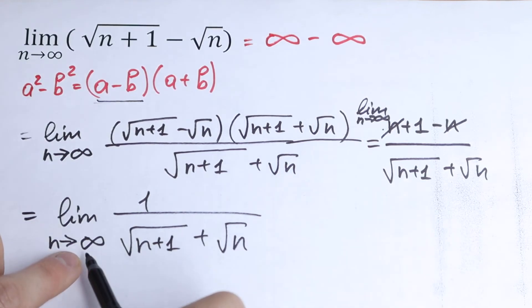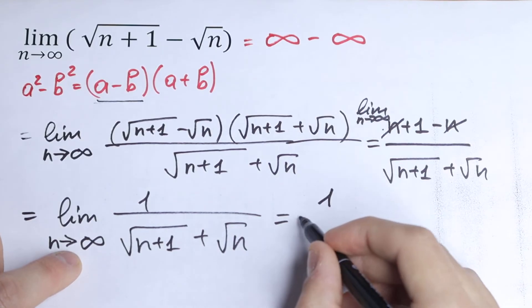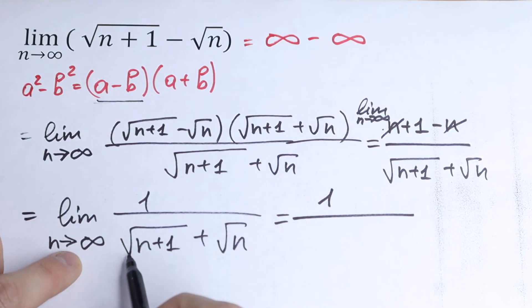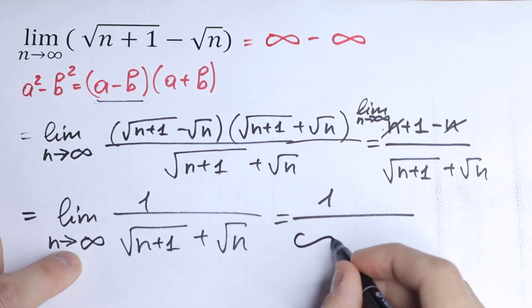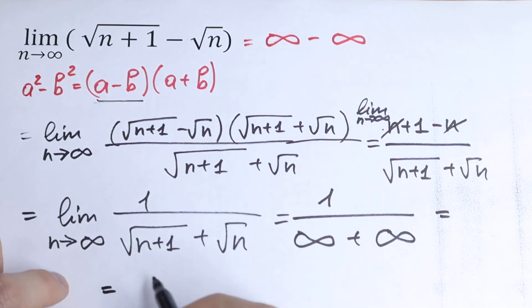And we of course can plug in infinity. So we will have that if we are talking about the limit, we will have 1 over this approaches to infinity and this plus infinity. So as a result we will have 1 over infinity, which will be equal to 0.